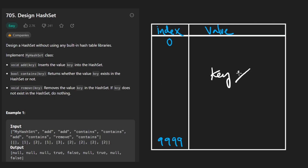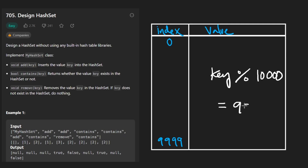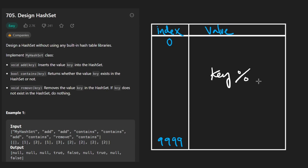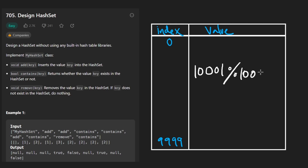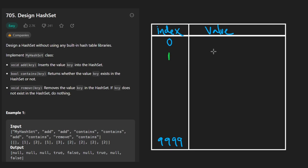We're only given integers, which further simplifies the problem. We need to map each key to some index in our array. The easiest way is using the mod operator: take the key value, mod it by the size of the array (10,000). This guarantees the result is always between zero and 9999, so it's always in bounds — even if the key is larger than 10,000.